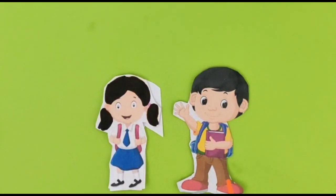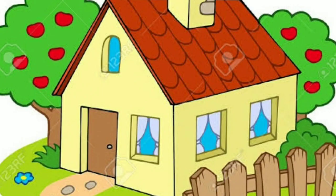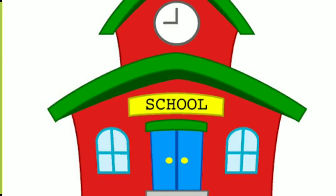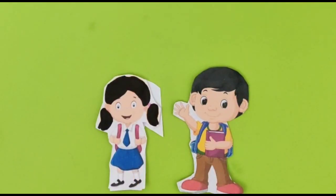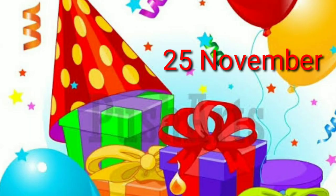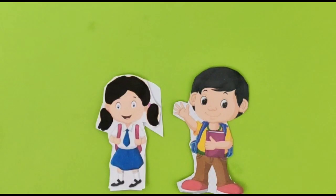Raman and Gagan were coming back home from school. On the way, they were talking with each other. Raman said to Gagan that my birthday is on 25th November. Gagan said which day is there on 25th November. Then Raman said now I have learnt how to read a calendar.